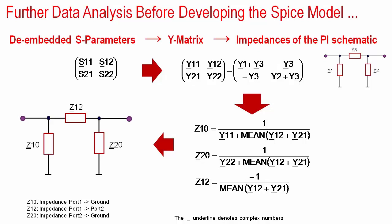In most cases, a Pi schematic-based SPICE model is applied for inductor modeling. The de-embedded S-parameters are converted to Y-parameters, from which the Pi schematic impedances can be obtained easily. The impedances Z10 from port 1 to ground, Z12 between the ports, and Z20 from port 2 to ground will be the starting points for the modeling.